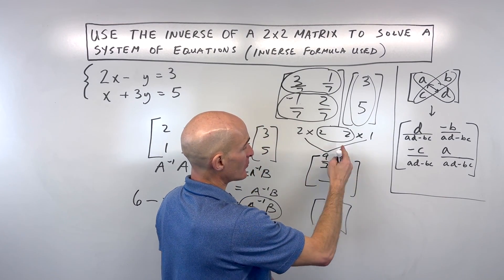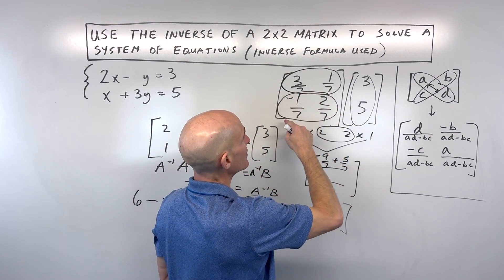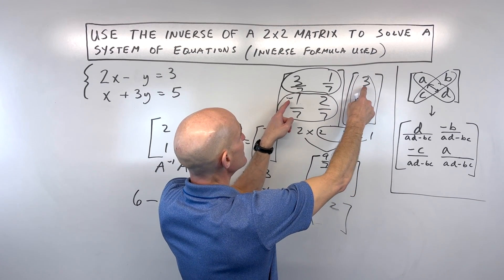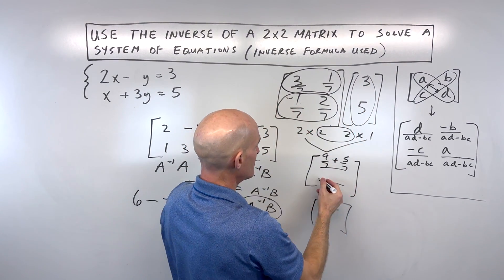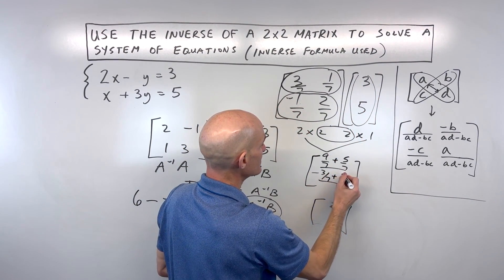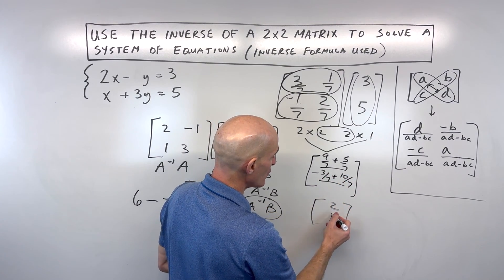Okay, now for this position, this is in the second row, first column. So we take this second row, first column, so that's negative 3 7ths, plus 10 7ths, which is equal to 7 7ths, which is 1.